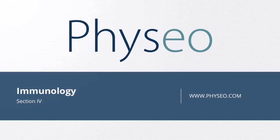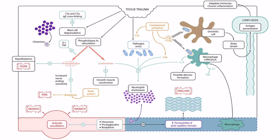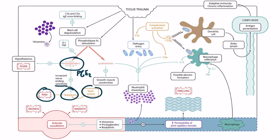Welcome to section 4 of immunology. In this section, we'll be discussing the kinin system. This is the overview image for acute inflammation. When initially discussing acute inflammation in section 2, we explained that bradykinin is what causes the sensation of pain, and prostaglandins, specifically prostaglandin E2, will cause increased nerve-ending sensitivity to bradykinin. Bradykinin is one of the primary products of the kinin system.